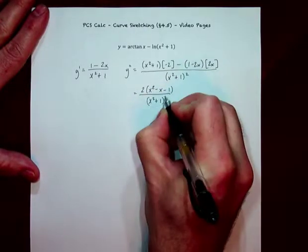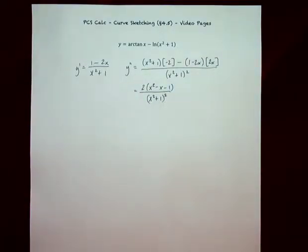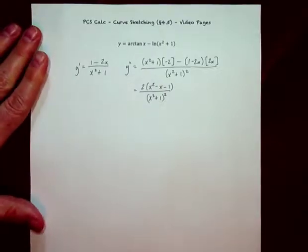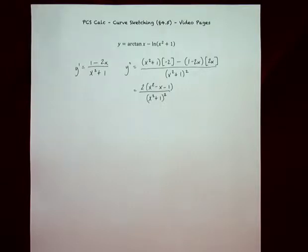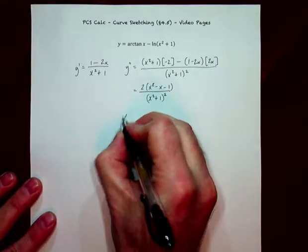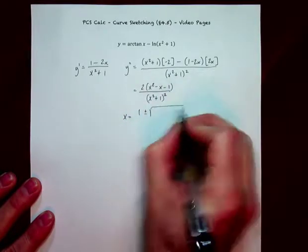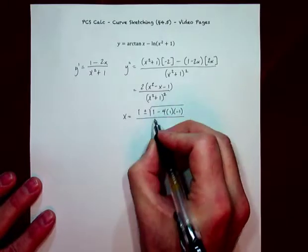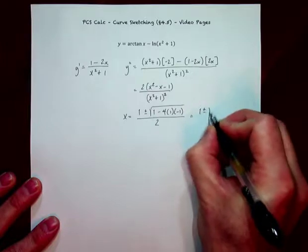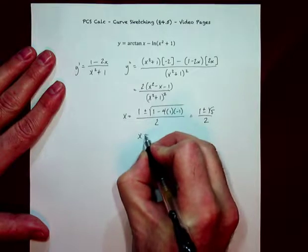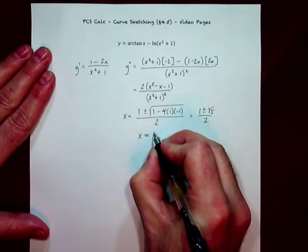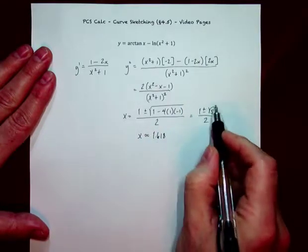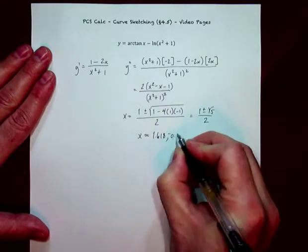The denominator of y double prime is always positive and will never be zero, so critical values come from the numerator. It won't factor nicely, so we use the quadratic formula: x equals negative b plus or minus the square root of b squared minus 4ac, all over 2, giving 1 plus or minus root 5 over 2. Interestingly, 1 plus root 5 over 2 — approximately 1.618 — is the golden ratio, phi, from the Fibonacci sequence. Those are the critical values for the second derivative.